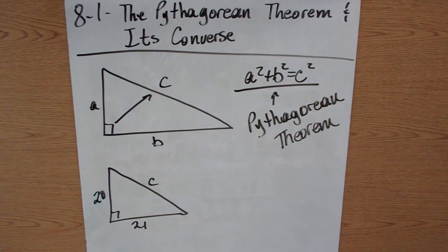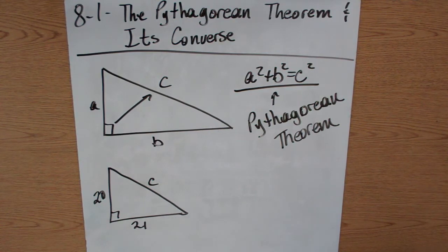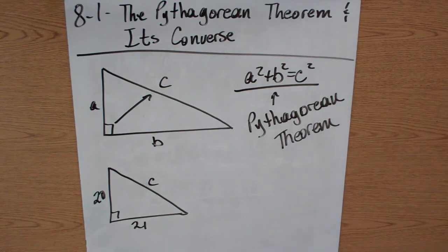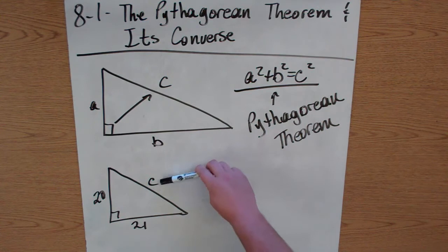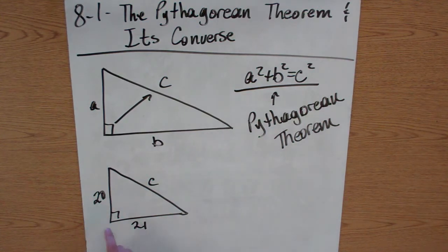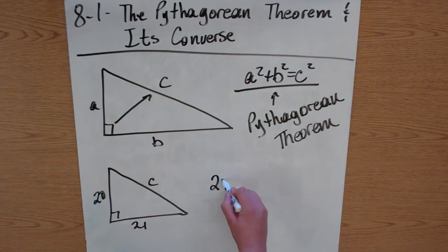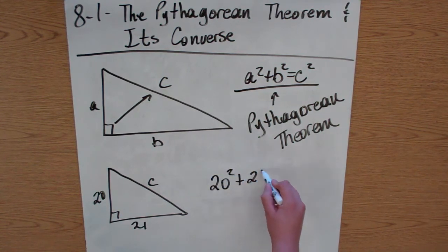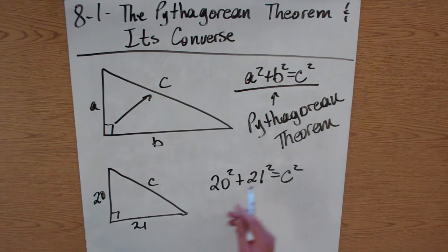So if a triangle has sides 3, 4, and 5, you would know that 5, since it's the largest number, is the hypotenuse of that right triangle. To find the hypotenuse, here we have a triangle with sides 20 and 21, and we're going to solve for c. So we set it up: 20 squared plus 21 squared equals c squared.